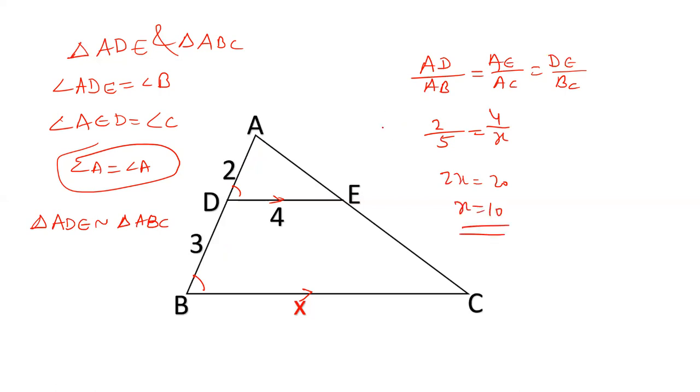What generally people think is that they take AD upon DB and DE upon BC. The correct value is 10 cm. But people generally do it like this: AD upon BD equals DE upon BC, and they are getting the answer as 6, which is wrong. The correct answer is 10 cm.